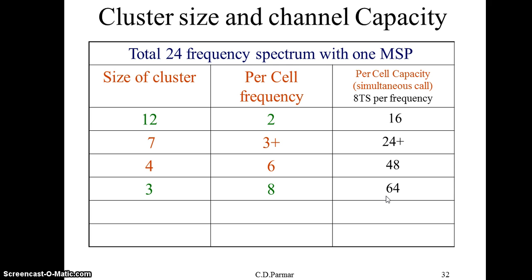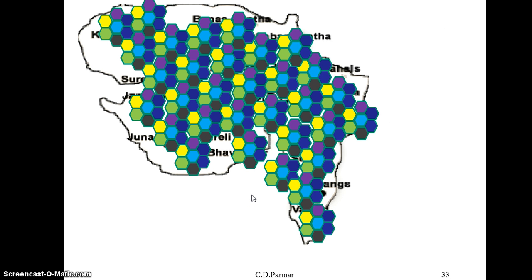So this is how, if we decrease the cluster size, we can increase the channel capacity. The question should arise: why are we not decreasing it as much as possible? The answer is that it is possible to move from higher to lower cluster size only if we are able to deal with co-channel interference. As you decrease the number of cells in a cluster, co-channel cells will be nearer to each other and interference chances will be more. A GSM system performs well only up to a certain signal-to-interference ratio, so we must maintain a suitable cluster size — mostly seven cells in a cluster.